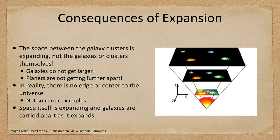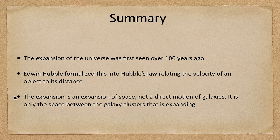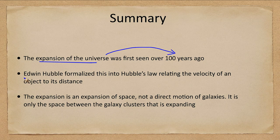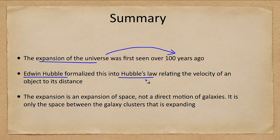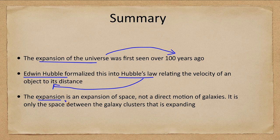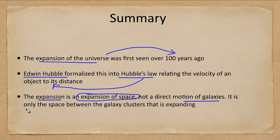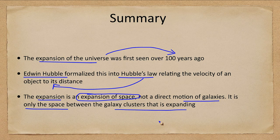So let's go ahead and finish up with our summary. What we've looked at is the expansion of the universe. We first looked at this over a hundred years ago now. And Edwin Hubble formalized this into Hubble's law, which relates the velocity of an object to its distance. And we looked at the expansion is an expansion of space. It is not a direct motion of galaxies. It is the space between the galaxy clusters that is expanding. And the galaxies are dragged along with this expanding space.